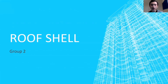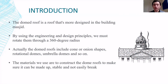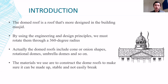Hi, I'm Lim Xie Hui, student number AF200131. I will explain about the dome roof shell. The dome roof is more designed in building margins. Using engineering and design principles, we must rotate them through a 360-degree radius so that the required roof shell, which is the dome-shaped roof, can be created. The dome roof includes cone or onion shapes, rotational domes, amber domes, and so on. If you want to build a dome roof, we can use various types of materials such as stone, wood, copper, and other materials, to ensure it can be made stable and non-deteriorating.